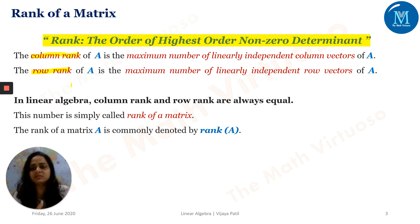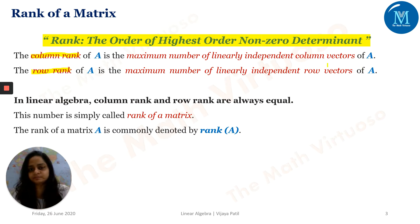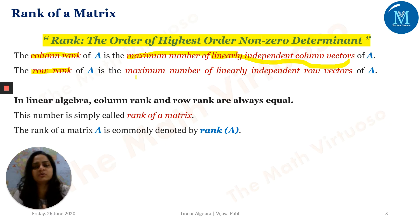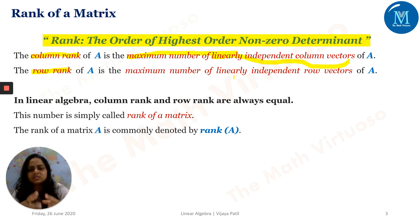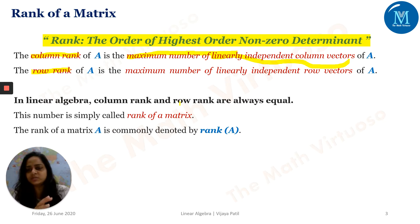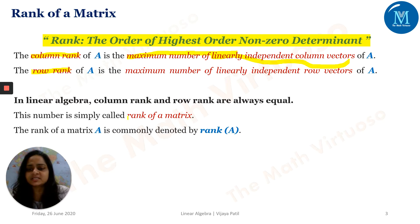As per the book, rank has been given as column rank and also as row rank. The column rank of A is the maximum number of linearly independent column vectors of A. If it is a row rank, we find the number of linearly independent row vectors. But in linear algebra, column rank and row rank are always known simply as rank.